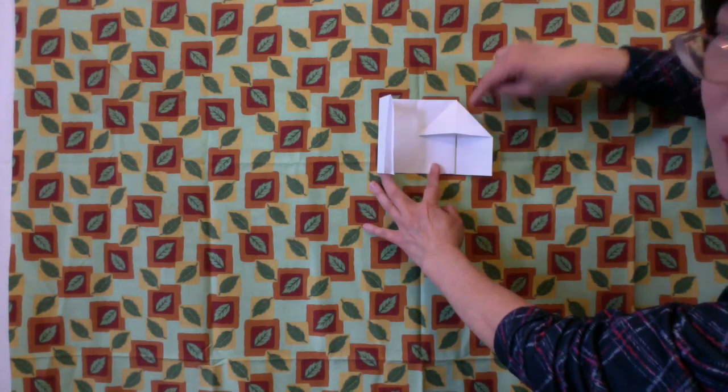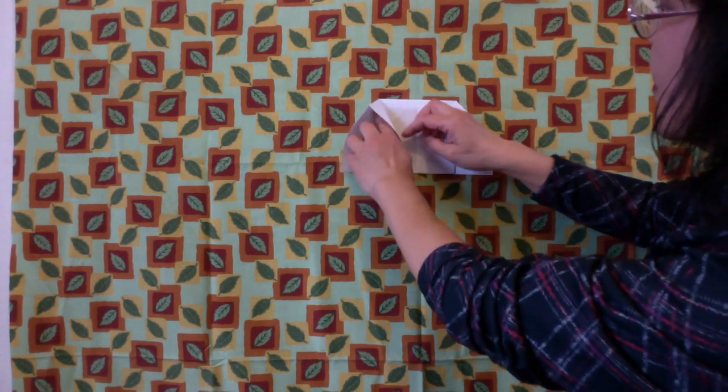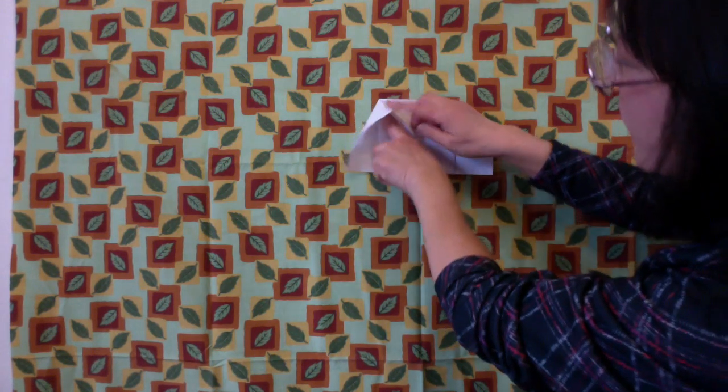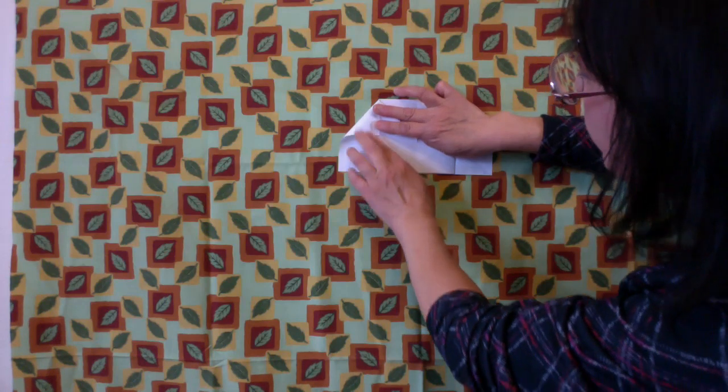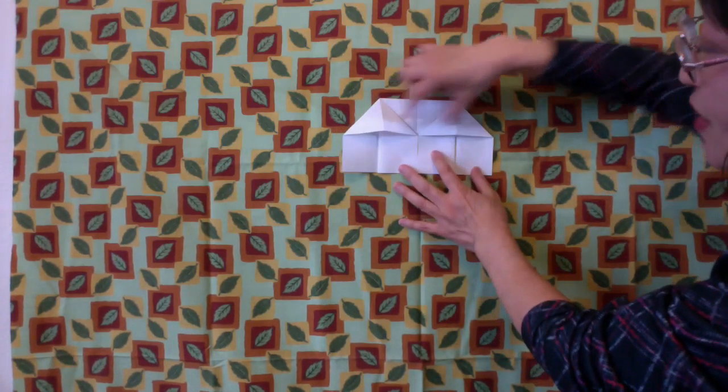Now that side looks like a little house. We repeat the same thing. Put your index finger all the way in here. Push it down to make a little house. We have two houses.